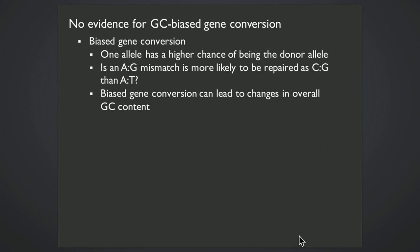Now I'm also trying to see what else I can learn about the characteristics of the gene conversions that I've identified. And you might know of a phenomenon called biased gene conversion, which is well documented at least in yeast and mammals, where one allele has a higher chance of being the donor allele used as the template for repair, such as an AG mismatch being more likely to be repaired as CG than AT.